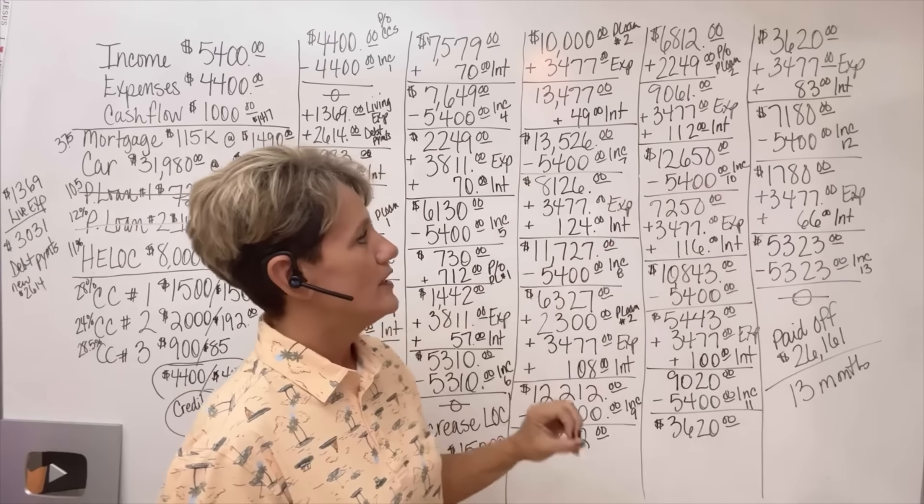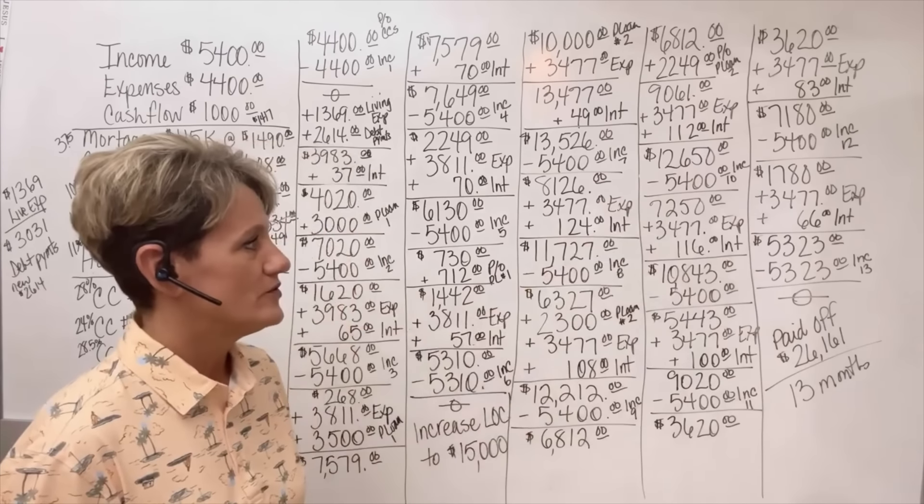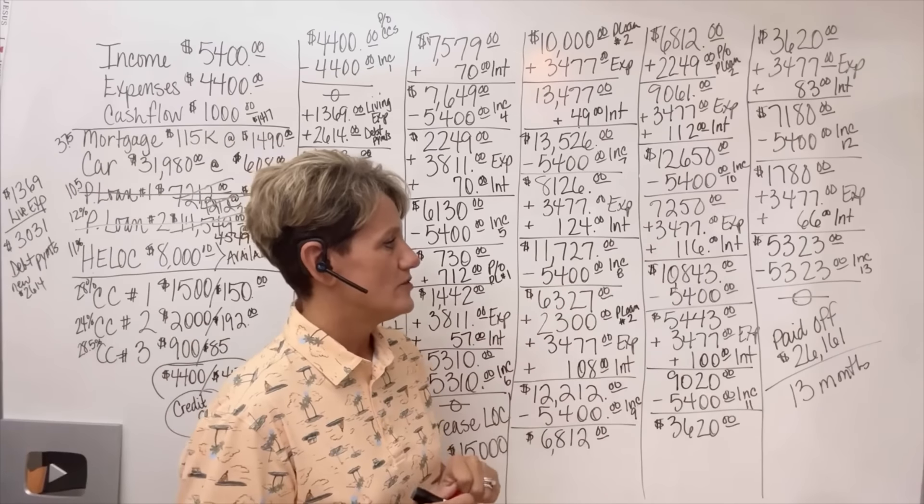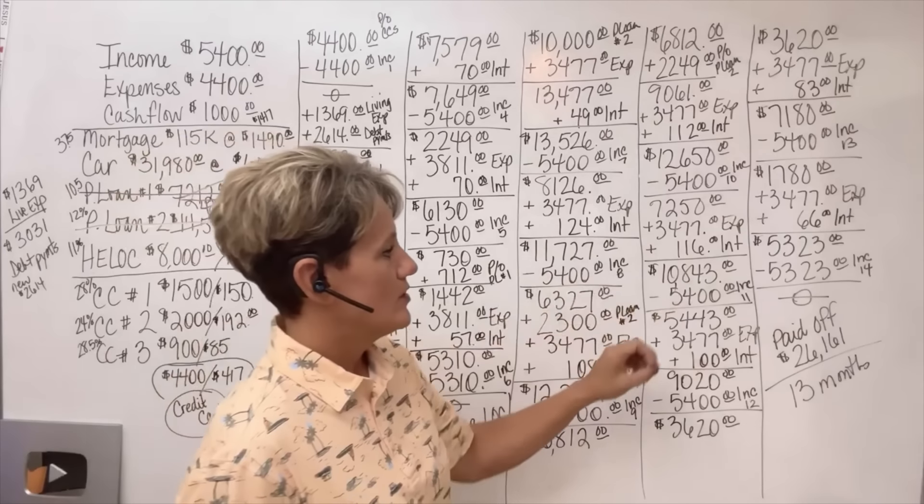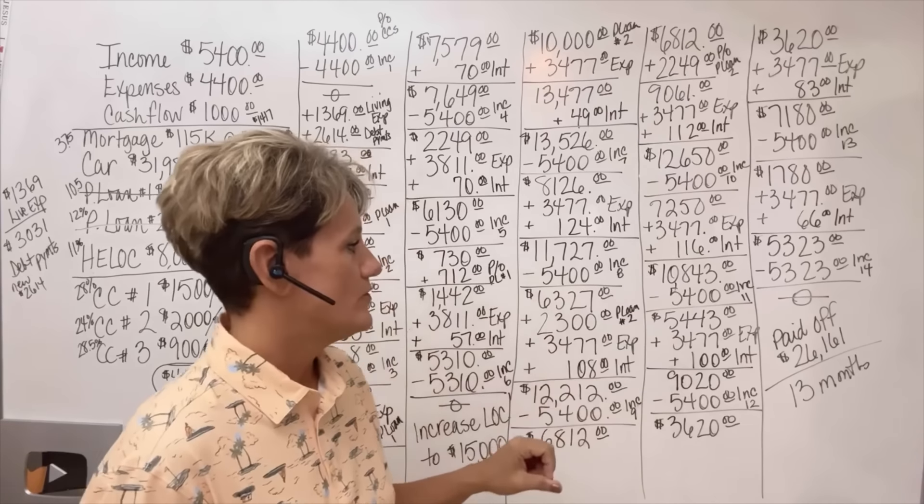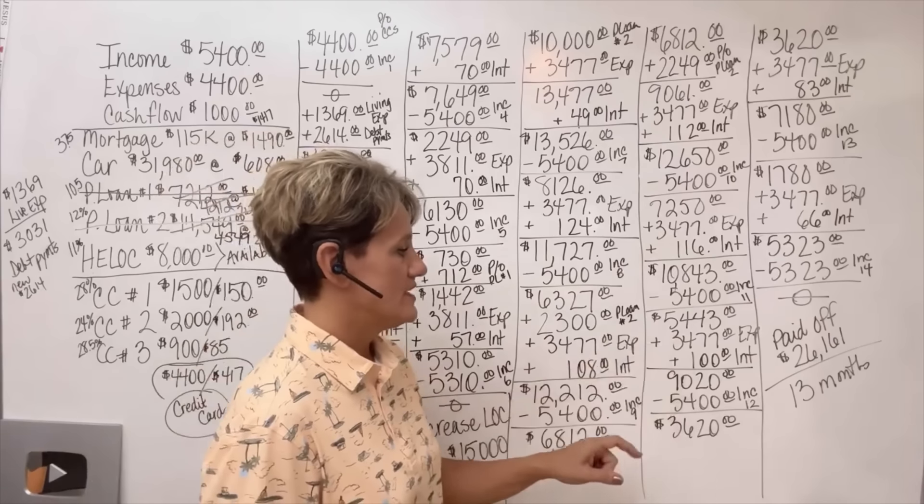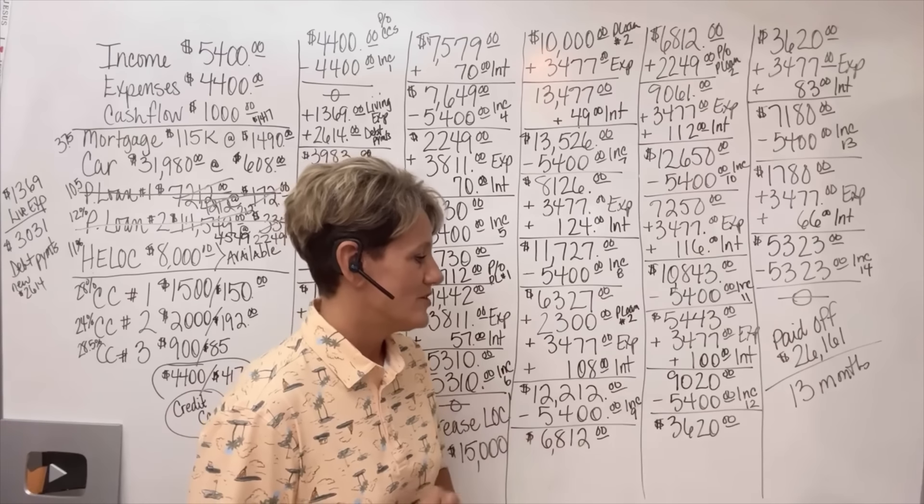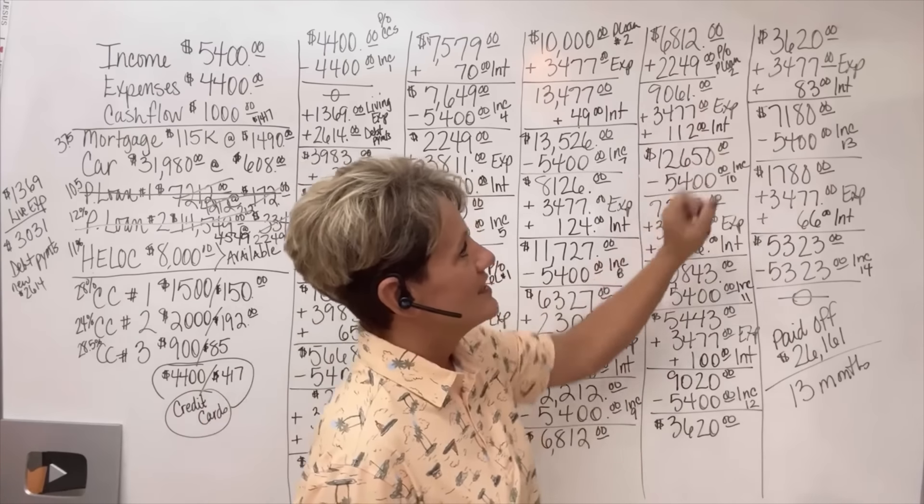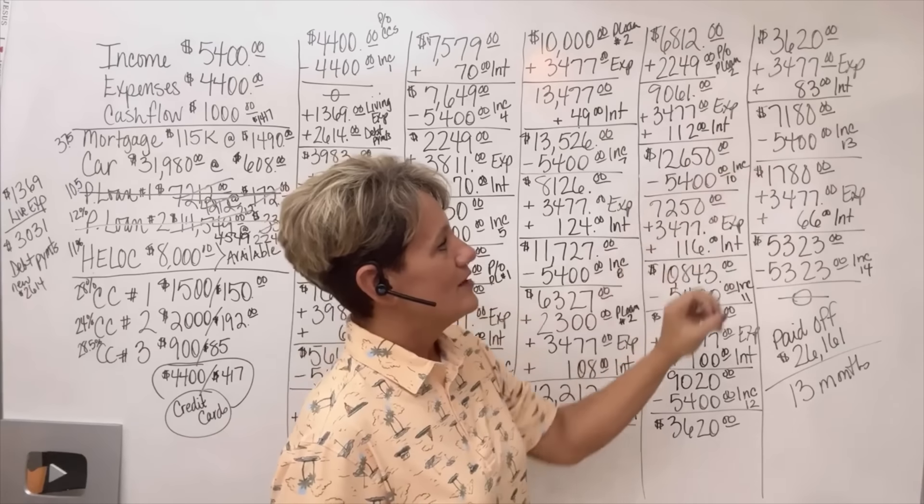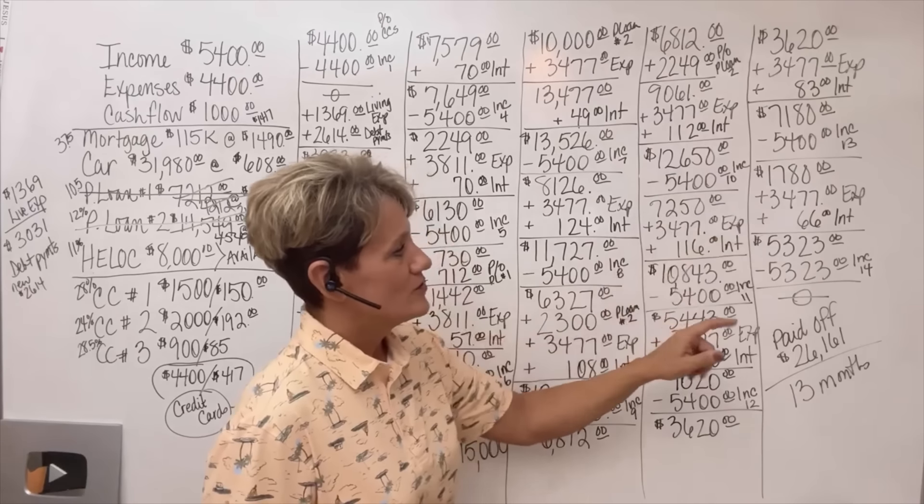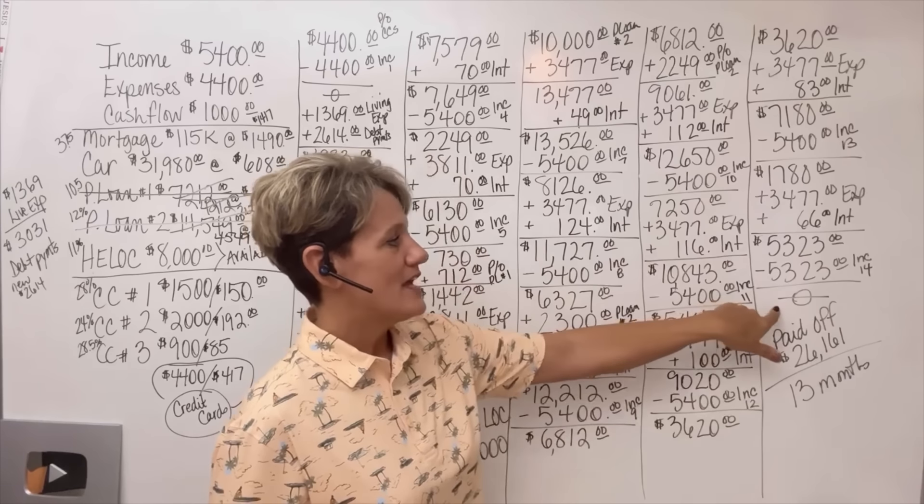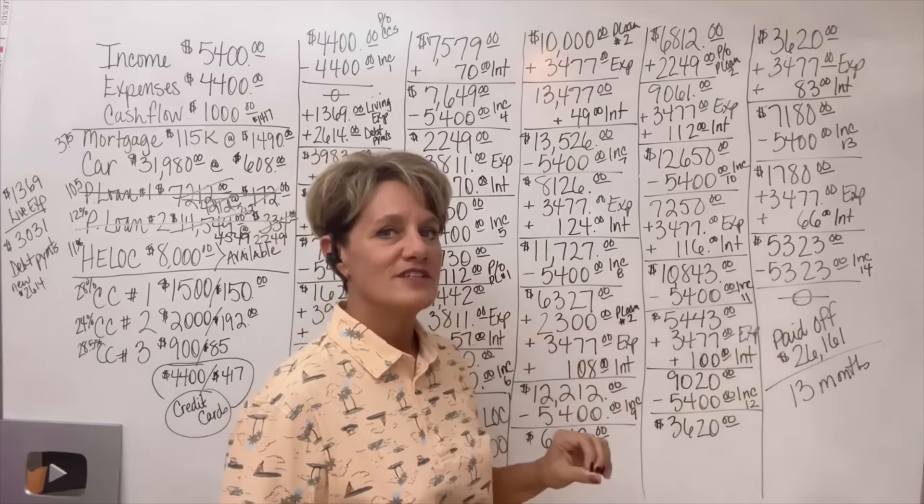In month 10, his income will go in again, bringing him back down to $7,250. His expenses and interest are going to come out again throughout the month, bringing him back up to $10,843. In month 11, his income goes in again, bringing him back down to $5,443. We're going to add in his expenses and his interest, bringing him back up to $9,020. And then in month 12, his income goes in, bringing him down to $3,620. The expenses and the interest will come back out. He'll do the same thing in month 13. Then his expenses and interest are going to come out, bringing him to $5,323. In month 14, his income goes in, wipes out this HELOC again, bringing him to a zero balance.